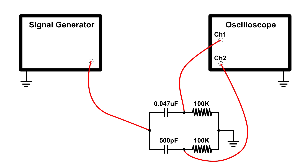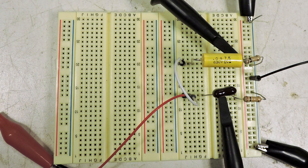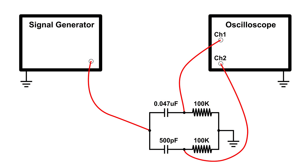To show the effect of capacitive reactance, I'm going to be using a signal generator that can generate a signal at a hundred Hertz all the way up to one megahertz, and two capacitors: a 0.047 microfarad capacitor and a 500 picofarad capacitor. We're going to look at both at the same time.